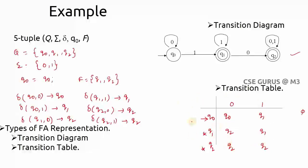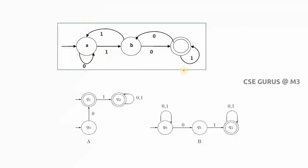If I give this transition table you can construct the transition diagram, no problem. This is the example of how we can construct and write the five tuples. You can practice for this transition diagram — here states are A, B, C and inputs are 0 and 1, and for these states are q-naught, q1, q2 with initial state q1. Practice writing all five tuples for these transition diagrams and also practice the transition tables. We'll see the next topics in the next video lecture. Thank you.